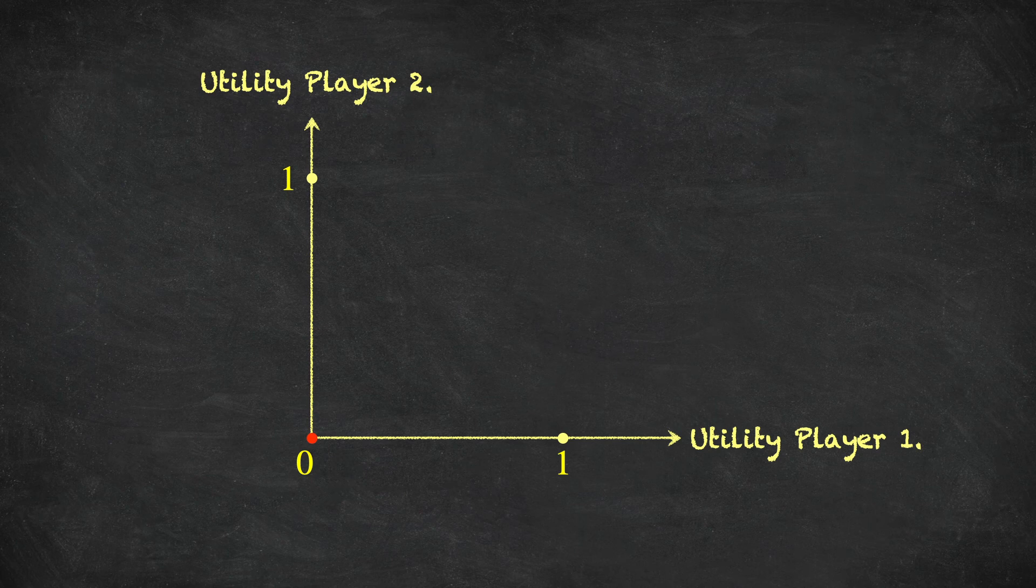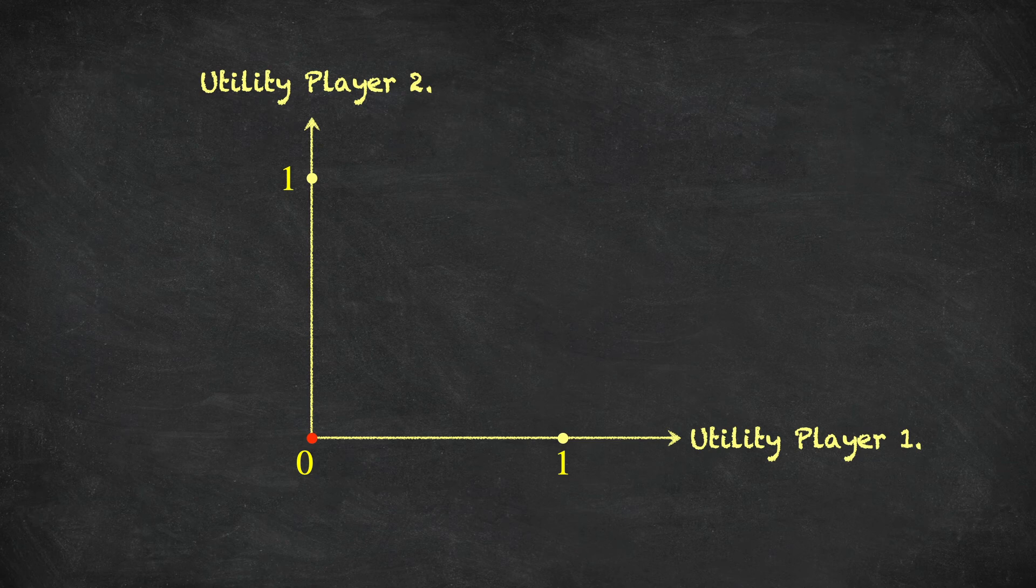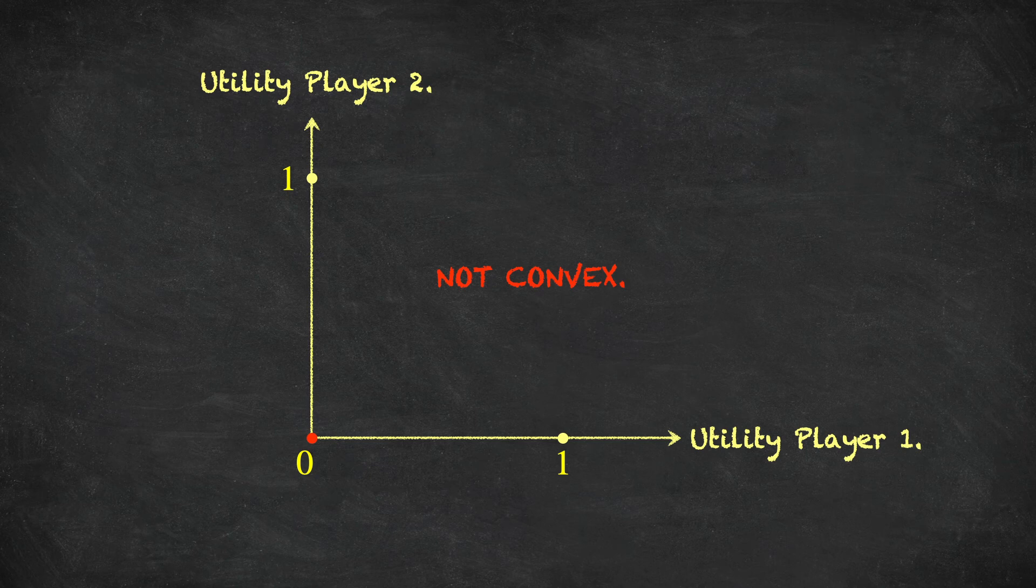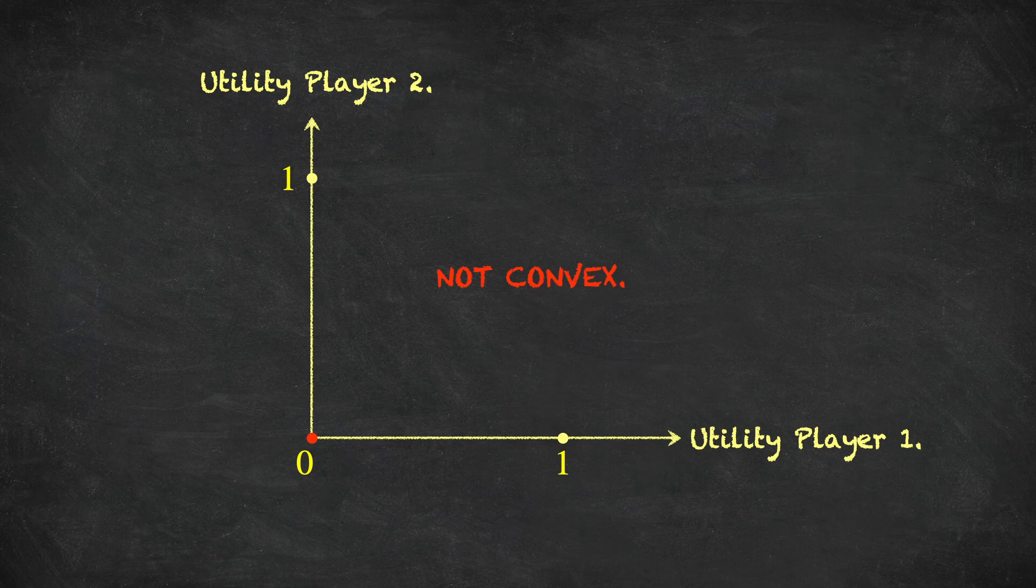Graphically, it looks like this, three separate points on this diagram, and of course, this is not a convex set.